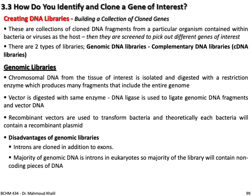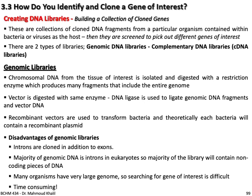The disadvantage of genomic libraries: introns are cloned in addition to exons because you digest the whole DNA. Since the majority of genomic DNA in eukaryotes is intronic, most of the library will contain non-coding DNA — only about 2% of total DNA consists of coding exons. Additional disadvantages include that many organisms have very large genomes, making searching for the gene of interest extremely difficult and time-consuming.